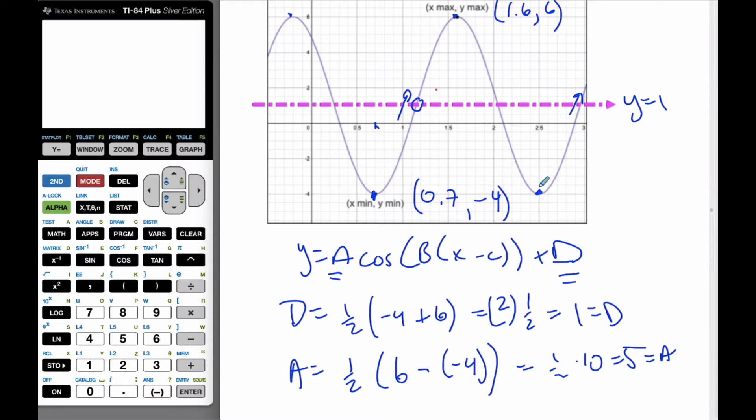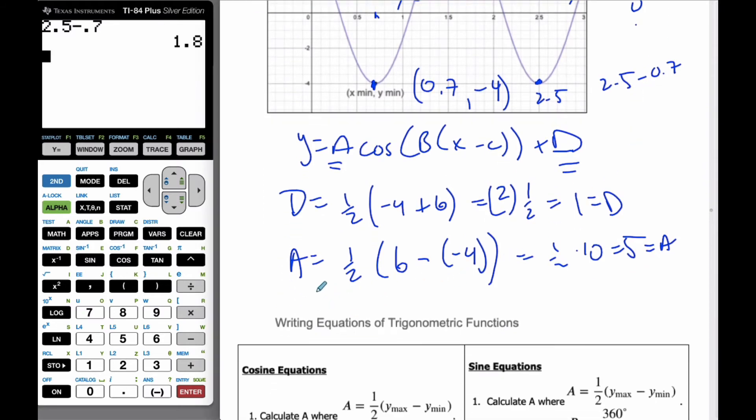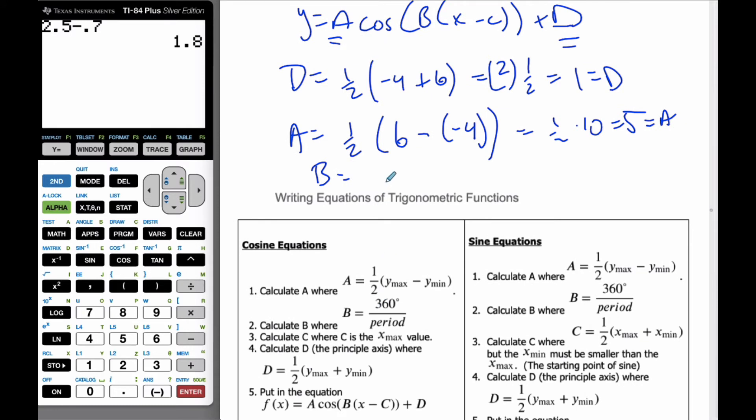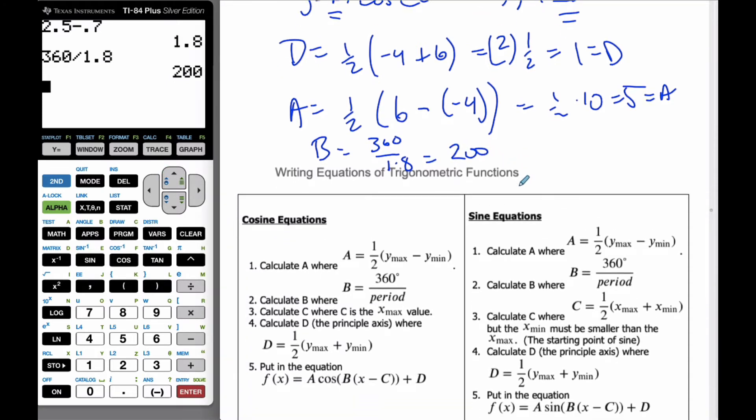This is 0.7, this is 2.5, and so the period is going to be 2.5 minus 0.7. So 2.5 minus 0.7, and I can get 1.8 is the period. And so my b value is equal to 360 divided by 1.8. So 360 divided by the 1.8 is equal to 200, is my b value.